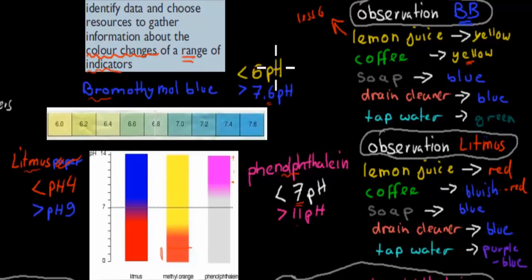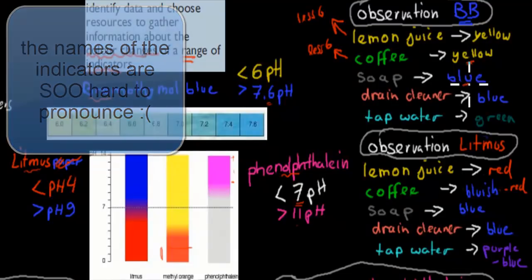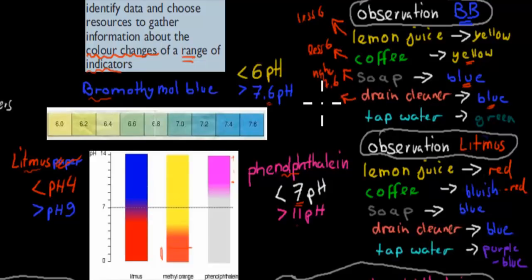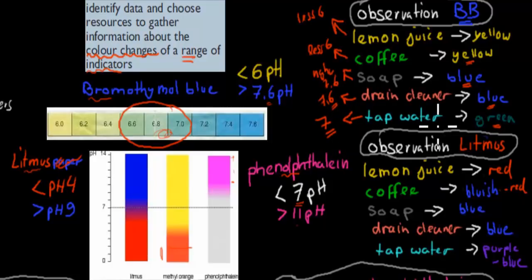Coffee also turned yellow, so coffee also has a pH of less than 6. We don't know exactly what it is, we just know it's less than 6. Soap turned blue — anything above 7.6 would turn blue, so soap has to be higher than 7.6. Drain cleaner also turned blue, so it's also higher than 7.6. Tap water turned green, which on the bromothymol blue scale is around about 7 — in between yellow (less than 6) and blue (more than 7.6). So, tap water has a pH of about 7 and would be neutral.